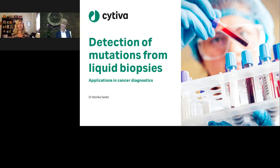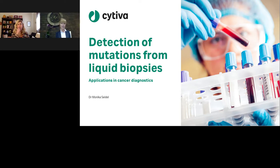In clinical applications, what is a preferable sample type — serum or plasma? There is a general consensus in the field that plasma is the preferred sample in clinical applications. This is based on reports showing that mutation allele frequency and the detection rate of cancer-associated biomarkers is much higher in plasma compared to matched serum samples. However, serum samples should not be dismissed completely — they are very important in retrospective studies for biomarker discovery in large cohorts and biobank samples.